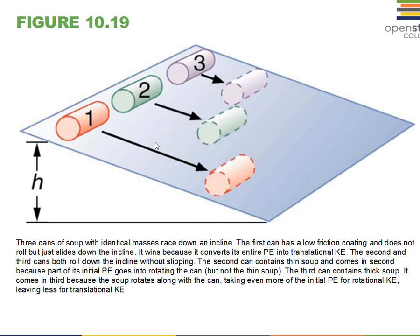Here's an interesting situation: rolling down a plane with three different objects whose masses are identical. The first can has a low friction coating, so the contents of the can don't spin — they just ride down the plane. In that situation, the liquid inside is not spinning up, so it doesn't take up rotational kinetic energy. All the potential energy, the mgh, goes into one-half mv squared — the linear kinetic energy going down the ramp.